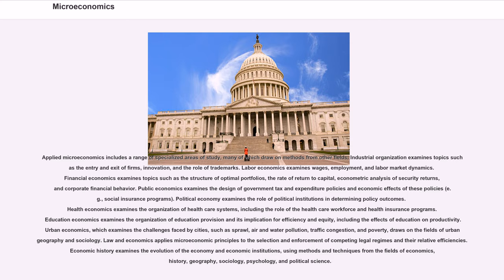Law and economics applies microeconomic principles to the selection and enforcement of competing legal regimes and their relative efficiencies. Economic history examines the evolution of the economy and economic institutions, using methods and techniques from the fields of economics, history, geography, sociology, psychology, and political science.